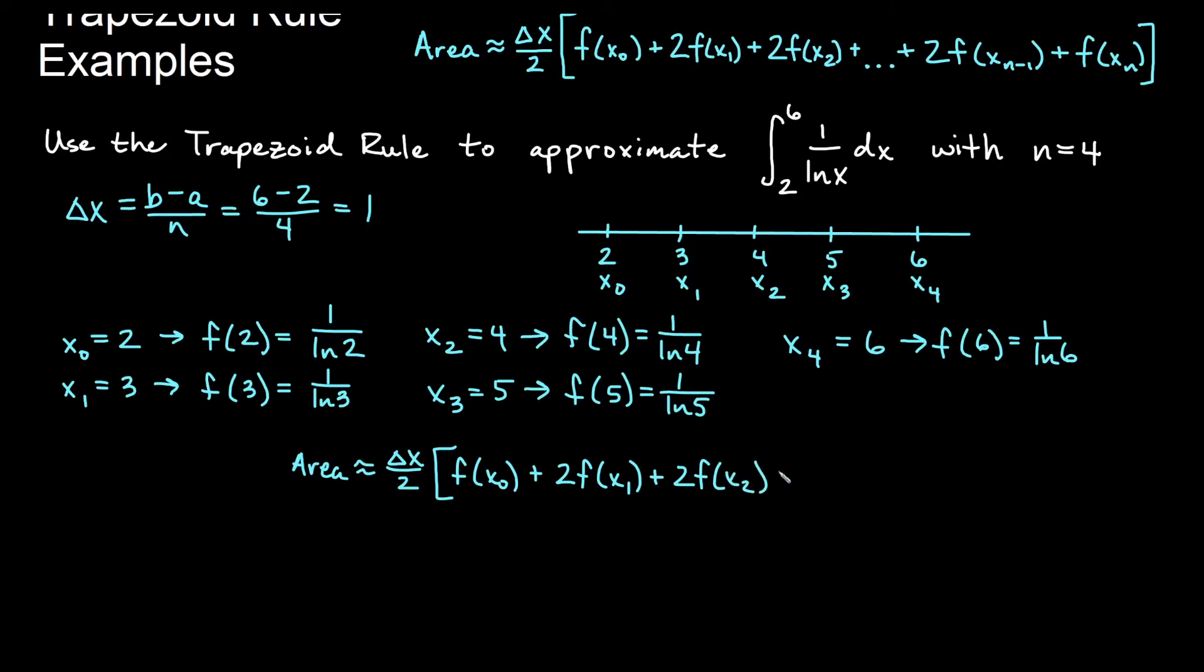We'll have 2 of the other y values until we get to the second-to-last y value. So 2 f of x₁, 2 f of x₂, and 2 f of x₃. And then your last y value, we will just have a single f of x₄. And we'll plug into that formula.